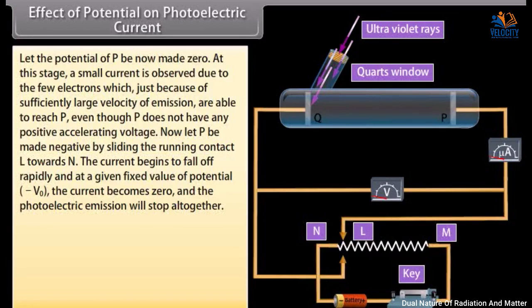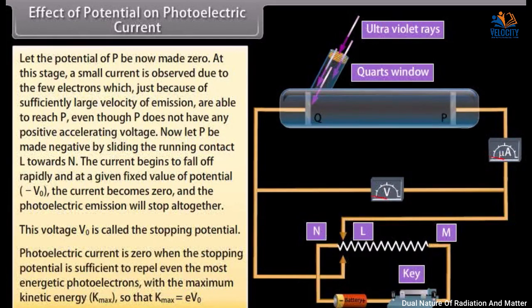At a given fixed value of negative potential, minus V0, the current becomes zero and the photoelectric emission stops altogether. This voltage V0 is called the stopping potential. The photocurrent is zero when the stopping potential is sufficient to repel even the most energetic photoelectrons with maximum kinetic energy K-max, so that K-max equals eV0.